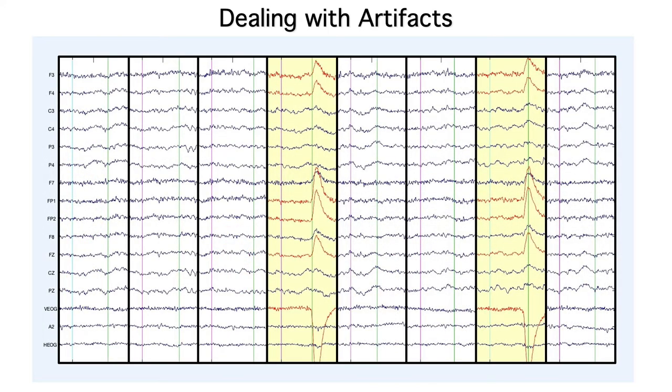Second we can throw out trials that contain large artifacts. For example, the trials highlighted in yellow here contain eye blinks, and we'd leave those trials out when we make our average ERP waveforms. This is called artifact rejection.